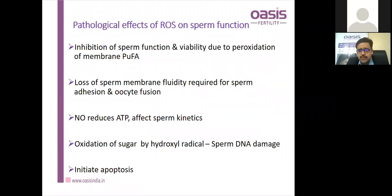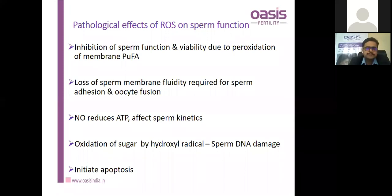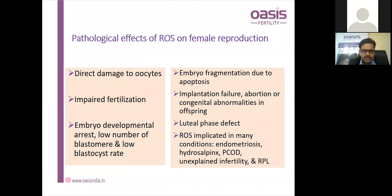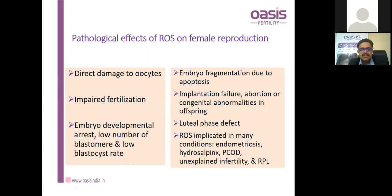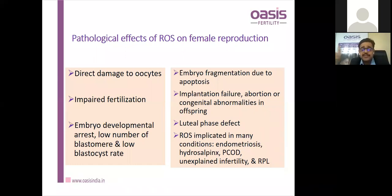Pathological effects of ROS on sperm function: it inhibits sperm function and viability due to peroxidation of membrane, loss of membrane fluidity required for sperm adhesion, and reduces ATP and sperm kinetics. It also initiates apoptosis. Similarly, ROS can affect female reproduction — directly damaging oocytes, causing impaired fertilization by IVF or ICSI, embryo developmental arrest, embryo fragmentation due to early apoptosis, implantation failure, abortion, congenital anomalies, and luteal phase defect.